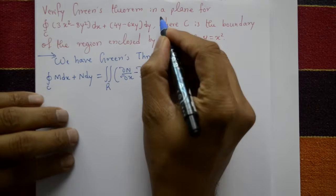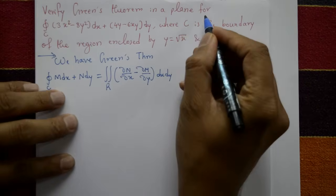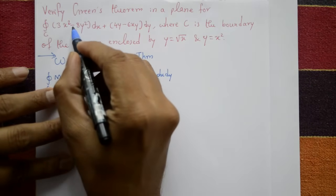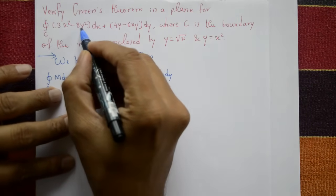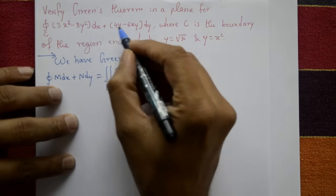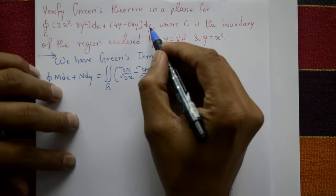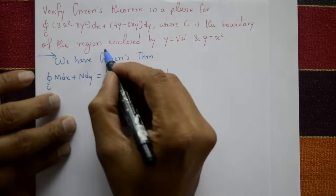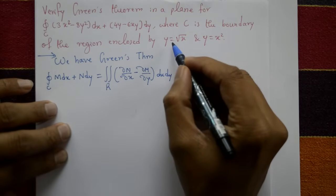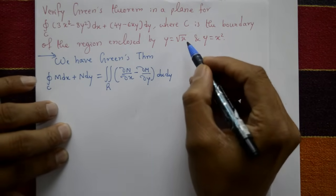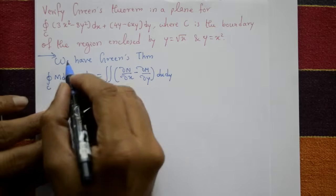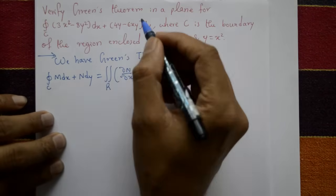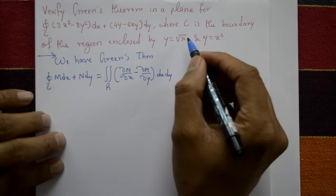Verify Green's theorem in a plane for the integration over closed curve: (3x² - 8y²)dx + (4y - 6xy)dy, where C is the boundary of the region enclosed by y = √x and y = x². To verify Green's theorem means left-hand side equals right-hand side.